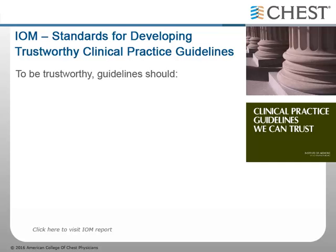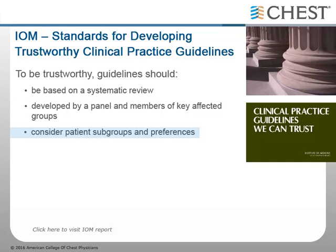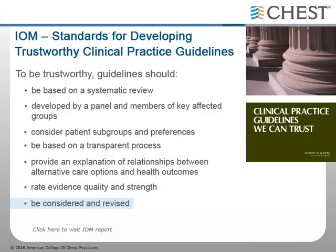To be trustworthy, guidelines should be based on a systematic review of the existing evidence, be developed by a knowledgeable, multidisciplinary panel of experts and representatives from key affected groups, consider important patient subgroups and patient preferences as appropriate, be based on an explicit, transparent process that minimizes distortions, biases, and conflicts of interest, provide a clear explanation of the logical relationships between alternative care options and health outcomes, provide ratings of both the quality of evidence and the strength of recommendation, and be considered and revised as appropriate when important new evidence warrants modifications of recommendations.